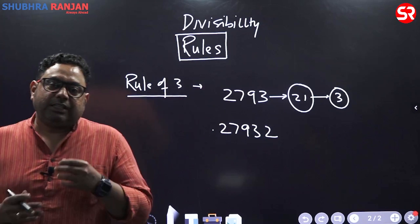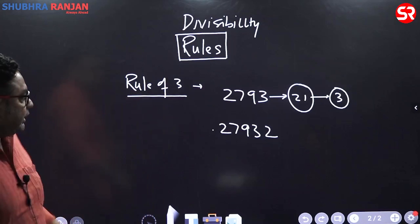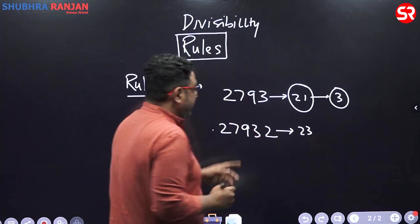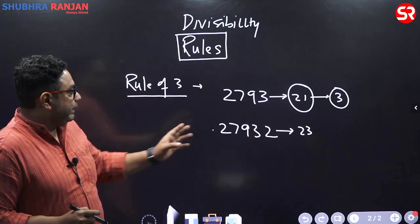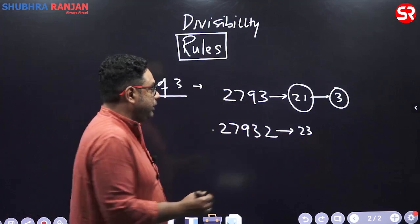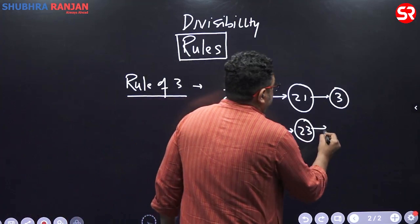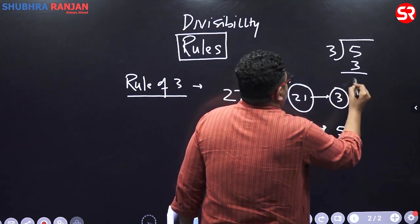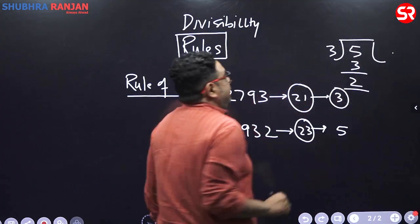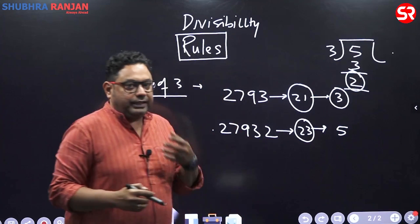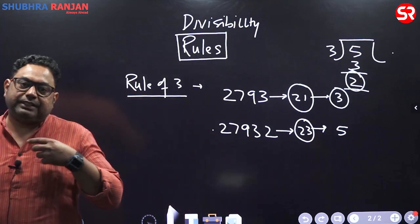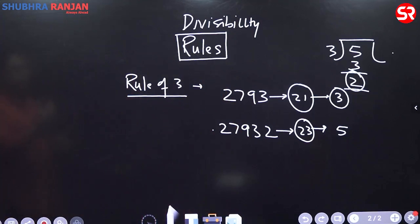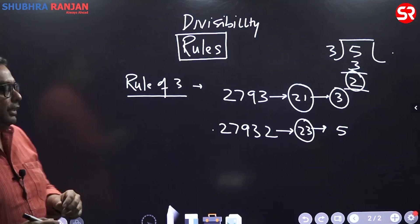The beauty of this rule is that it gives you remainders as well. For 27932, the digit sum is 23 (I've appended 2 to the previous number), and 2+3=5. When 5 is divided by 3, the remainder is 2. So the rule works two ways — it tells you whether the number is exactly divisible by 3, and if not, what the remainder is.